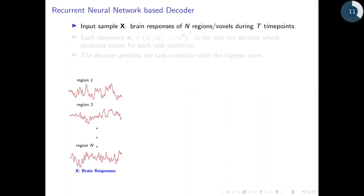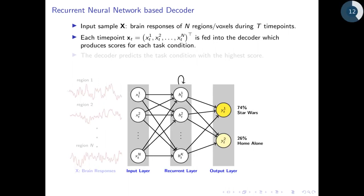For this task, we employed an RNN based decoder. We have our input sample consisting of responses from N different brain regions during T time points. The input sample is then fed into the RNN time point at a time. After reading the entire input, the RNN generates scores for each of these 15 movie clips. For ease of visualization, the figure here shows only two movies, Star Wars and Home Alone.